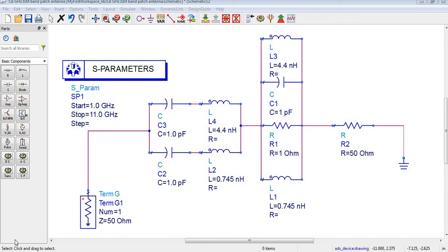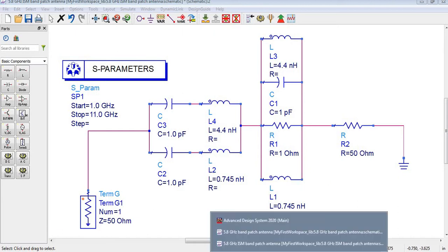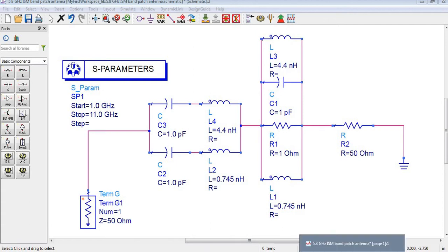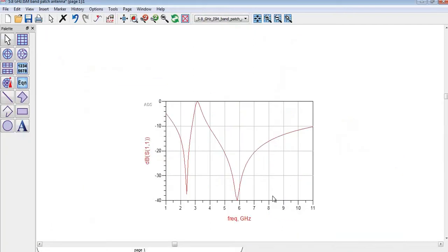Hello assalamualaikum and welcome back to all of you. In this tutorial I have tried to make a dual band antenna which will operate at 2.4 gigahertz and 5.8 gigahertz. You can see this is not an ideal result.